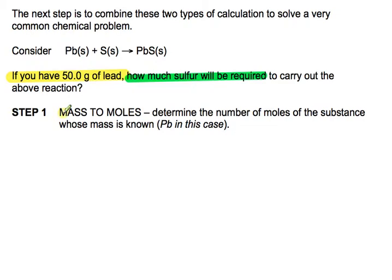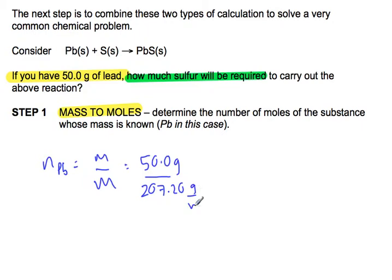The first step is a mass-to-moles calculation. We have a mass of lead, so we're looking for the number of moles of lead. Number of moles of lead equals mass divided by molar mass. Our mass was given as 50.0 grams; our molar mass of lead is 207.20 grams per mole — remember, two decimal places for molar masses. When we calculate, we get 0.241 moles of lead.